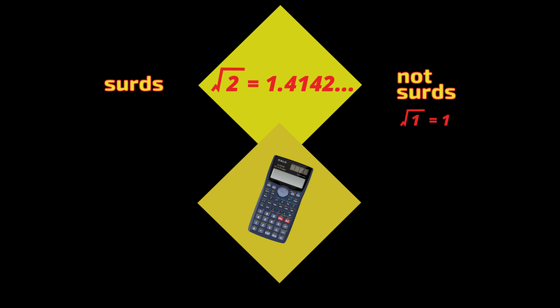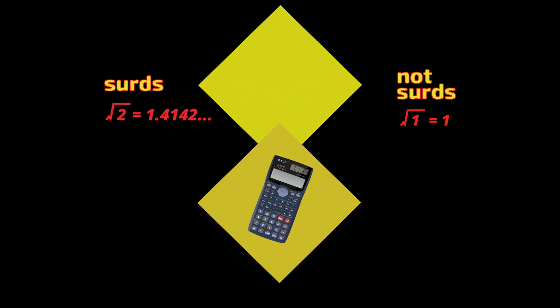Approximations are not exact enough for complex engineering calculations, so we write the square root of 2 as it is. Writing this as the square root of 2 assumes that it has the exact value with all of its decimal numbers, without the inconvenience of having to write all of them. And it's not an approximation.